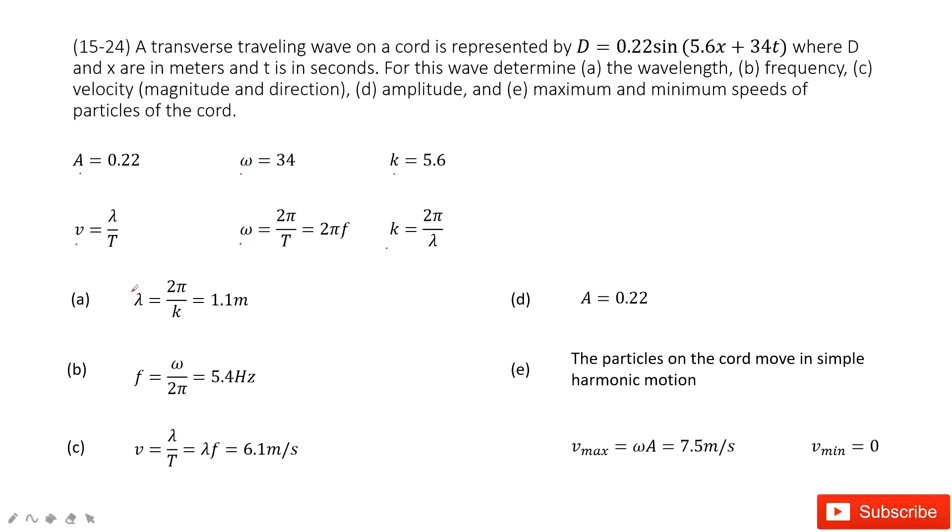First, we need to find the wavelength. The easiest approach is to use this equation. k is given, 2π is a constant, so lambda equals 2π over k, and you get the answer.